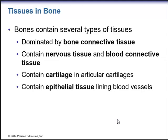Moving on to bones: bones contain several types of tissues. They are dominated by bone connective tissue but also contain nervous tissue, blood connective tissue, cartilage at articular surfaces where bones articulate, and epithelial tissue lining the blood vessels.